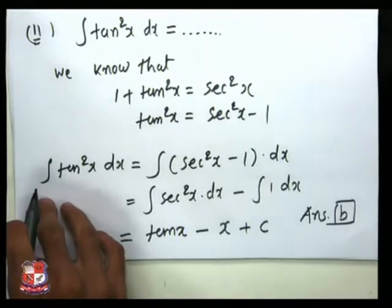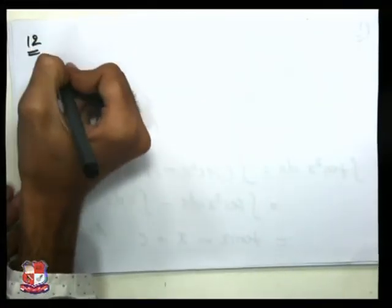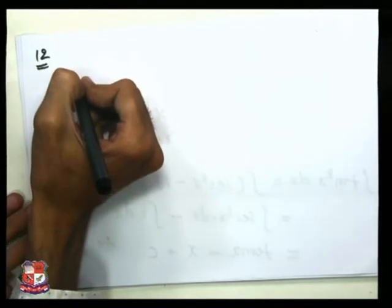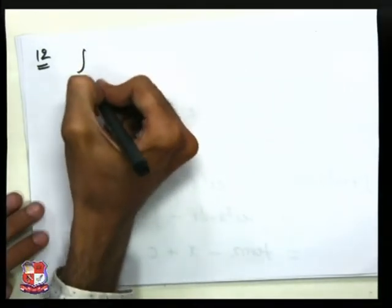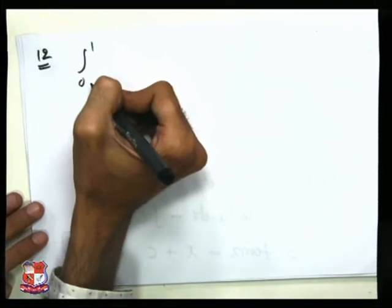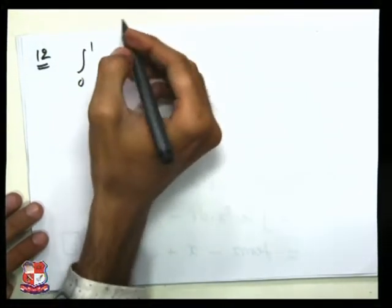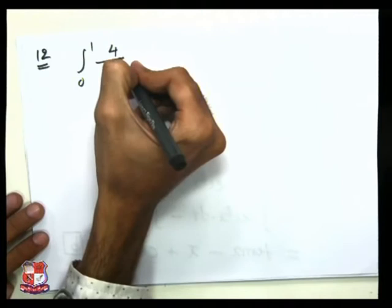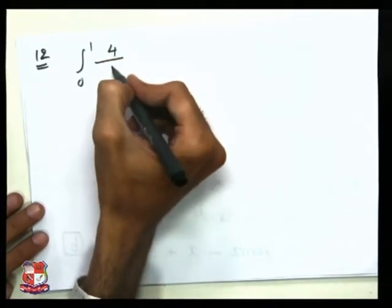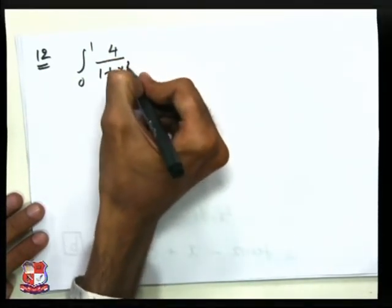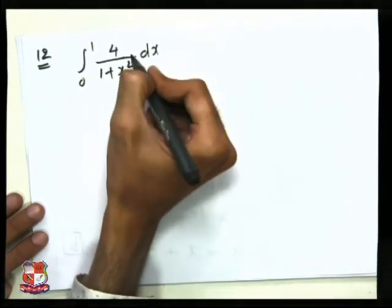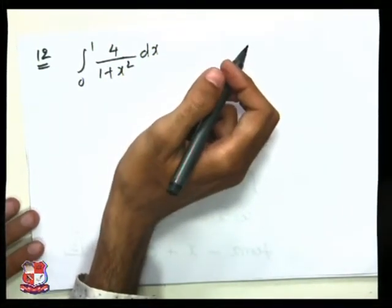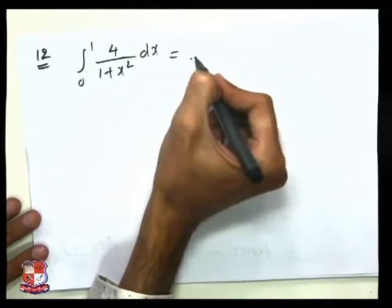Now let us solve the 12th blank, which is also from the integration side. The 12th blank is a definite integration question: the integral from 0 to 1 of 4/(1 + x²) dx. This is a straightforward definite integration question.